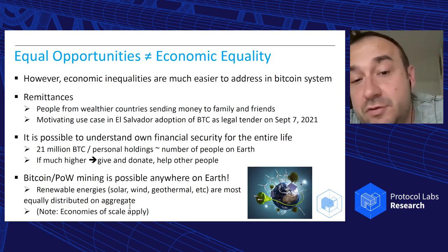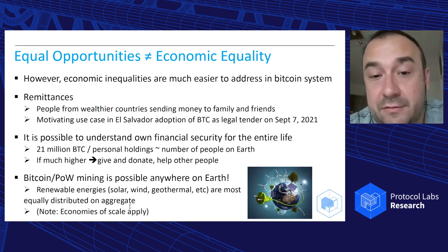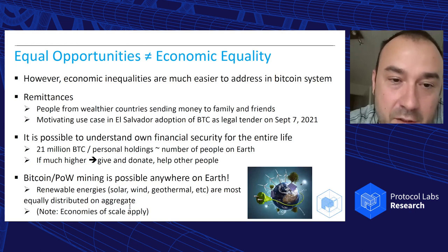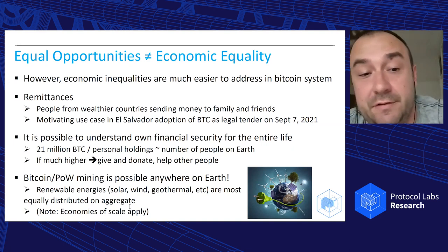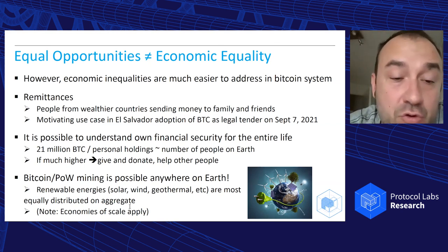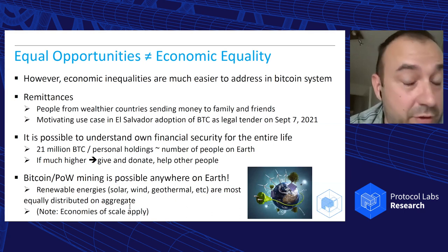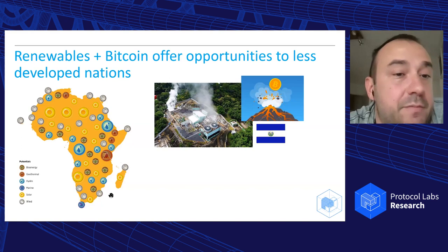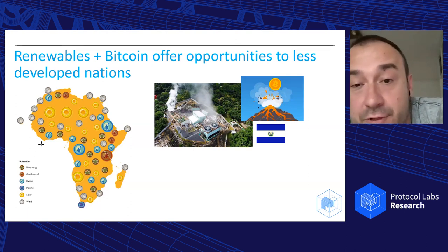You don't need intermediaries to transfer money from wealthier to poorer family members. This was one of the motivated use cases for El Salvador's adoption of Bitcoin as legal tender. You can also do Bitcoin proof-of-work mining anywhere on Earth. Economies of scale apply and it's not easy to mine on a laptop anymore, but if El Salvador mines on a volcano using geothermal energy, or if Africa uses renewable resources — renewable resources are actually spread across the planet fairly equally, unlike oil.